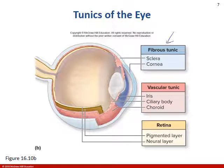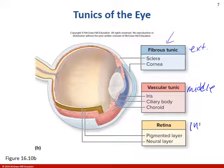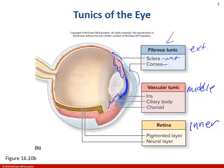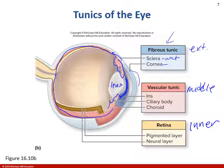Looking at the different layers: the external, middle, and inner. The white part of the eye, the sclera, and the cornea belong to the fibrous tunica. Then we have the vascular tunica which includes the iris, the ciliary bodies which suspend the lens, and the choroid which wraps all the way around the eye.